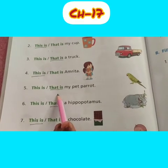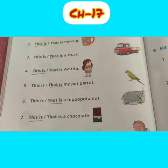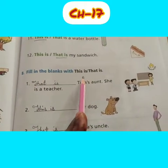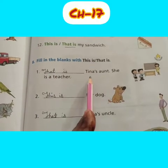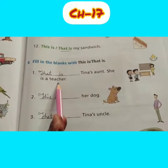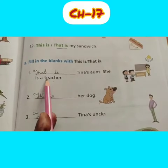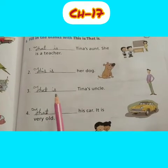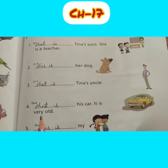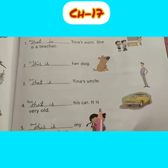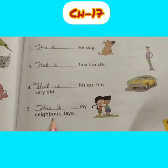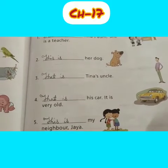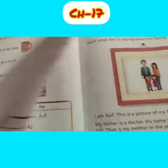Then fill the blanks with 'this is' or 'that is'. That is Tina's aunt — she is a teacher. You see the sentence is very far away, so we use 'that is'. And this dog is nearby, so we use 'this is'. And that is Tina's uncle — far away. That is his car — it is very old. And this is my neighbor Jaya — this sentence is near, so we use 'this'. I hope all of you understand the use of 'this' and 'that'.